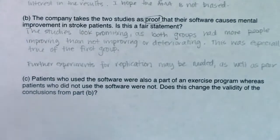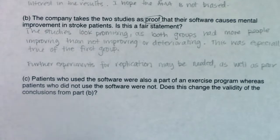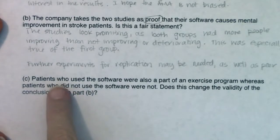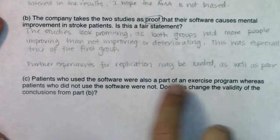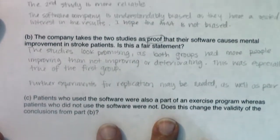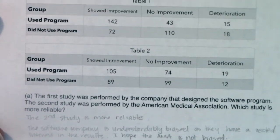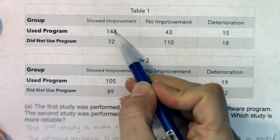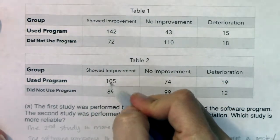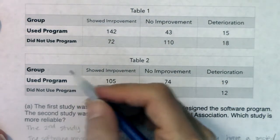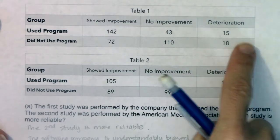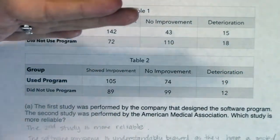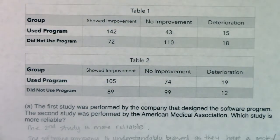Part C: patients who used the software were also part of an exercise program, while patients who did not use the software were not. Does this change the validity of the conclusions from Part B? Our conclusion from Part B was that this study looks promising — the software program might really cause problem-solving skills to improve after a stroke. But we find out the patients on the software program were also exercising. This creates a problem: did these 142 or 105 folks show improvement because of the program or because they exercised? Since one group exercised and the other didn't, you've introduced a confounding variable — you're not sure whether it was the exercise or the software program.